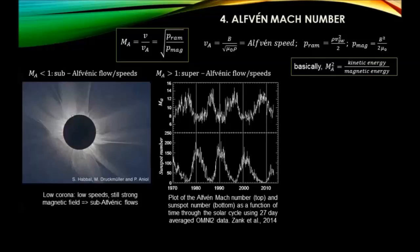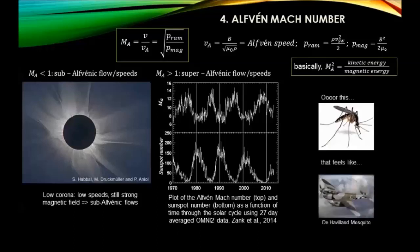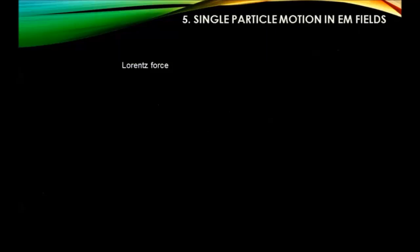An Alfvén Mach number greater than one is given by the solar wind - at Earth it's usually around 10. There's a really good anti-correlation with sunspot number: as the sunspot number decreases toward solar minimum, the magnetic field is lower, so the Alfvén speed is lower and the Mach number rises. And a super-Alfvénic flow feels like trying to sleep while something very loud is happening.